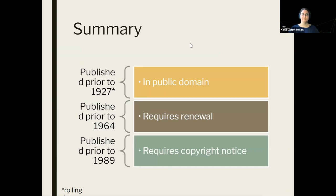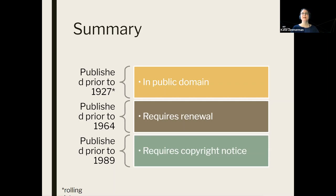By summary: if something is published prior to 1927 — a rolling date, it'll be 1928 next year — it is in the public domain. If it is published between 1927 and 1964, you need to look for a renewal record; if there's no renewal record, it's in the public domain. And if it's published prior to 1989, it also requires a copyright notice — so lacking a copyright notice is another way something can be in the public domain.